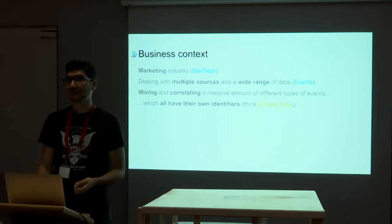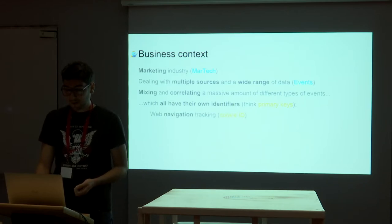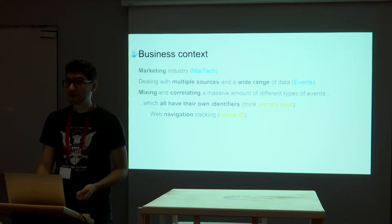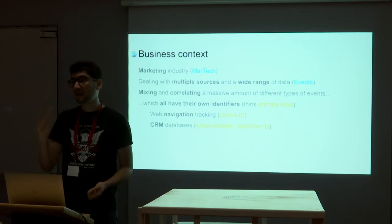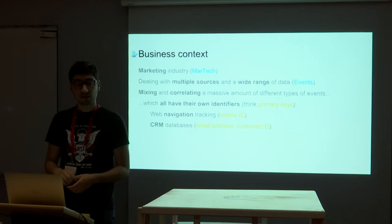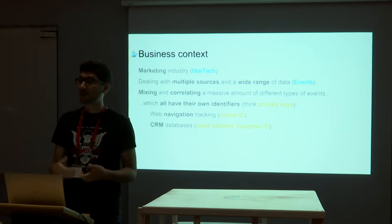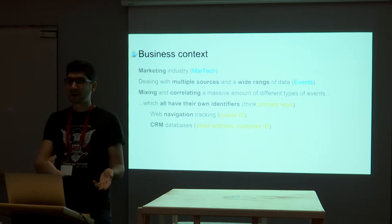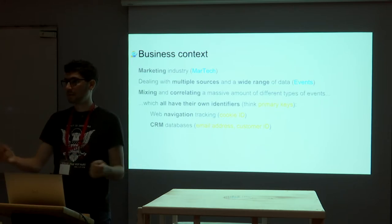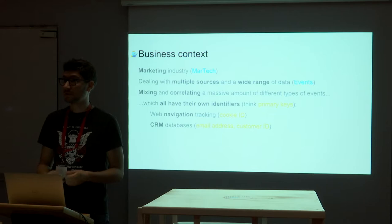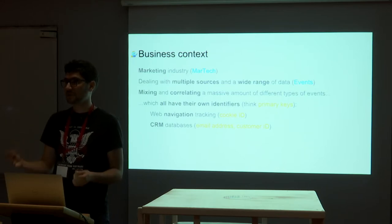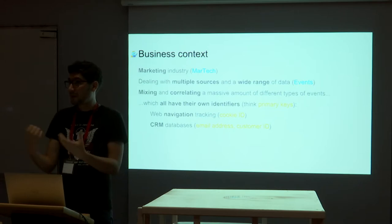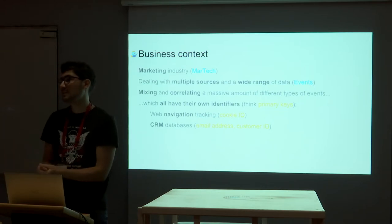Since they are separate, they all have a different primary key. How do you mix them? How do you correlate them? This is the key of people-based marketing. Typical example: web navigation gives you a cookie ID. CRM databases — Customer Relationship Management — are client databases where you have your purchase history, subscriptions, and everything a brand knows about you. In CRM, the email address is the primary key.